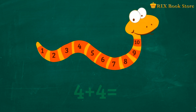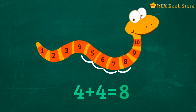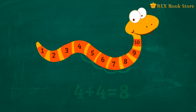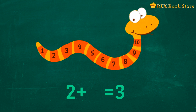Can you add four plus four? Did you get eight? Now try something different. Two plus blank is equal to three. We know that we should start at two. And to get to three, we need to count on how many times? One. So two plus one is equal to three.